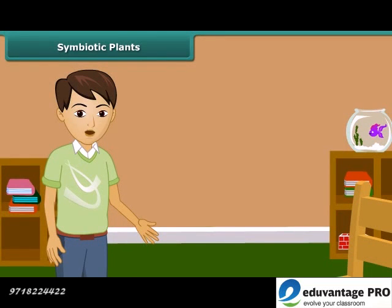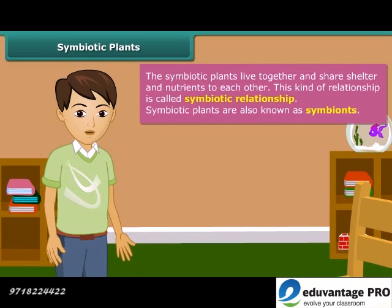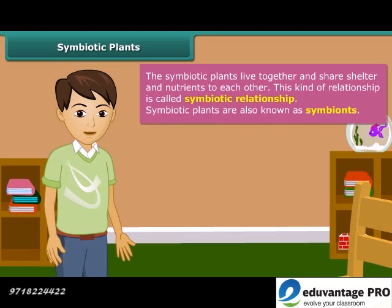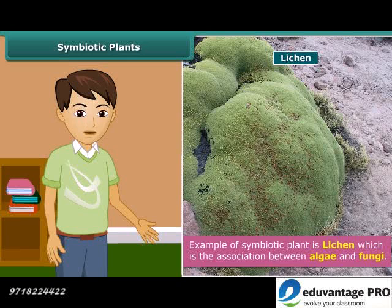Have you ever heard about symbiotic relationship? The relationship between two dissimilar organisms in which both are living together and share shelter and nutrients with each other is called symbiotic relationship. The organisms involved in this kind of relationship are called symbionts. Lichen is a good example of symbiotic relationship — it is the association between algae and fungi. In this relationship, algae provide food to fungi, and fungi provide protection, absorbed water, and minerals to algae.